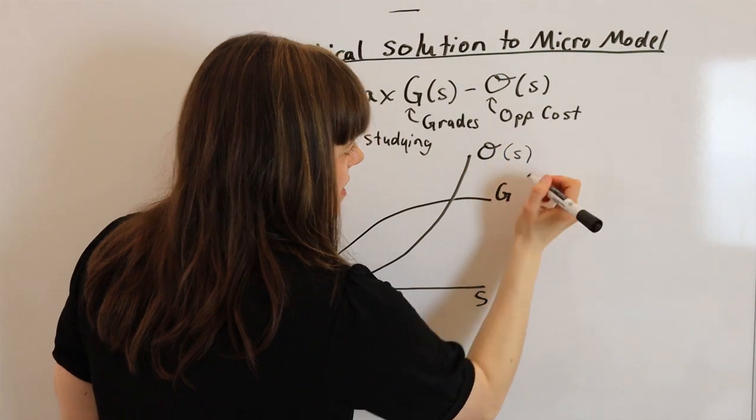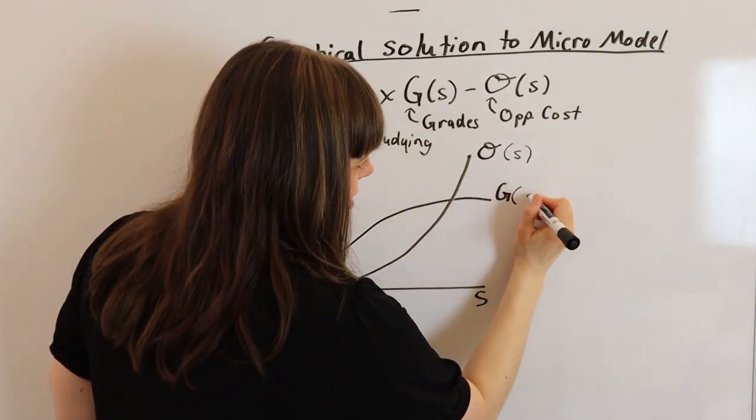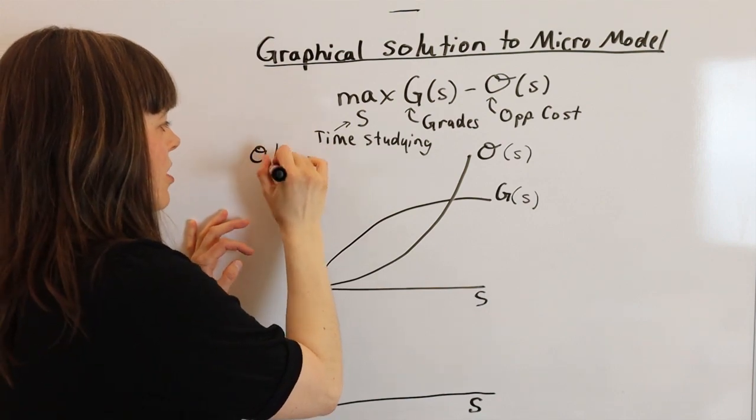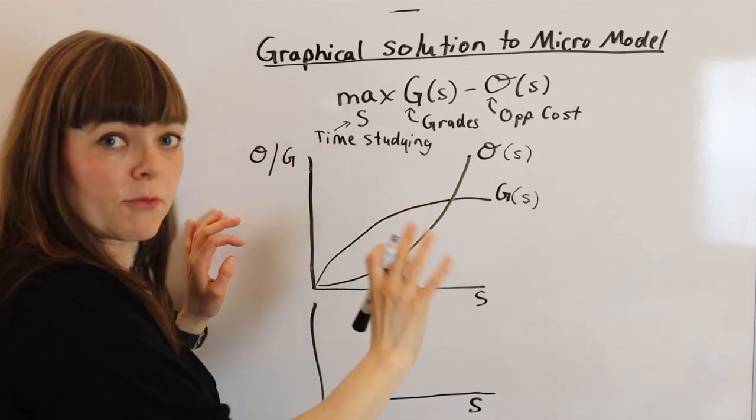Opportunity cost depends on time spent studying, grades depend on time spent studying. And our y-axis here is graphing both opportunity cost and grades on the same graph.